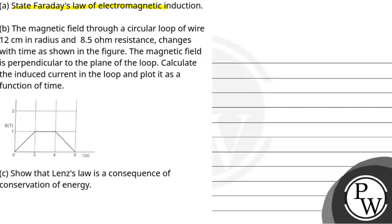It's a statement of the paradigm of electromagnetic induction. Part A. Part B: the magnetic field through a circular loop of wire 12 cm in radius and 8.5 ohm in resistance changes with time as shown in the figure. The magnetic field is perpendicular to the plane of the loop. Calculate the induced current in the loop and plot it as a function of time.